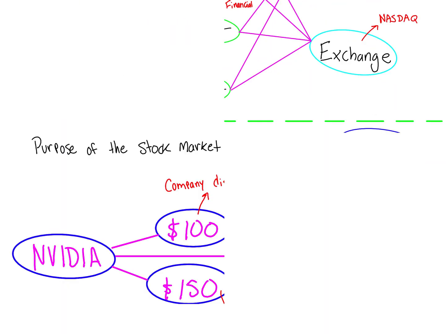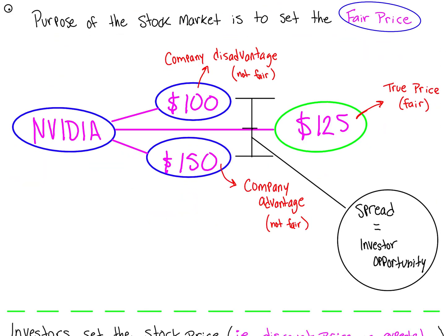Now that we understand the marketplace, let's talk about the purpose of the stock market. The purpose is to set the fair price. Using NVIDIA as an example, I've listed three prices: $100, $125, and $150. $125 is what NVIDIA is truly worth today, but most of the time companies are not priced at their true price. If NVIDIA is priced at $100 on the stock market, you and I can go to our broker and purchase shares at a much lower price than what NVIDIA is actually worth - this is considered a company disadvantage.